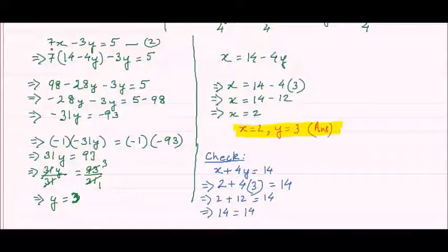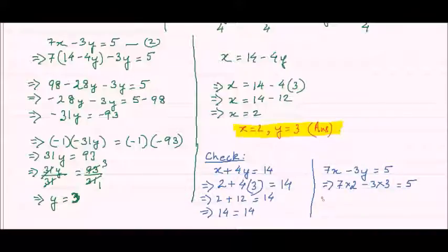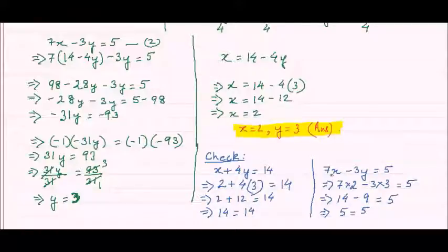Now checking equation 2: 7x minus 3y equal to 5. Substituting x equal to 2 and y equal to 3 gives 7 times 2 minus 3 times 3, which is 14 minus 9 equal to 5. So 5 equal to 5, confirming that x equal to 2 and y equal to 3 satisfies equation 2 as well. Our answer is correct.